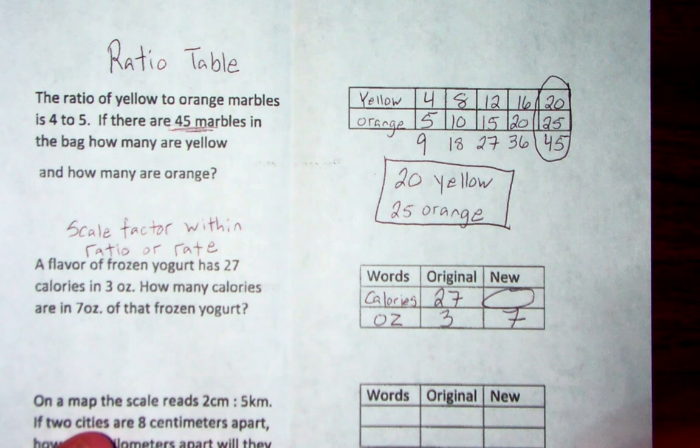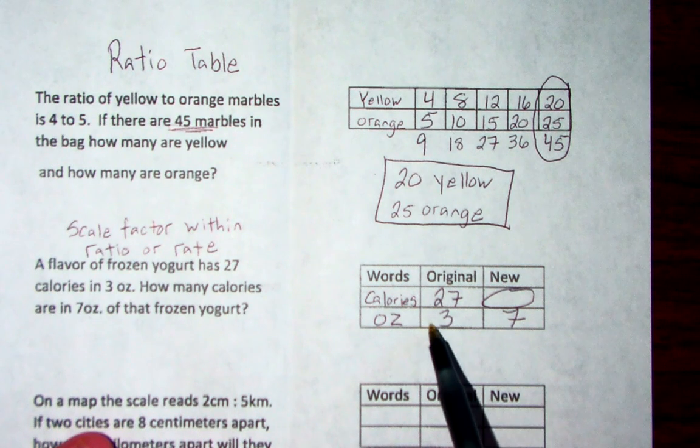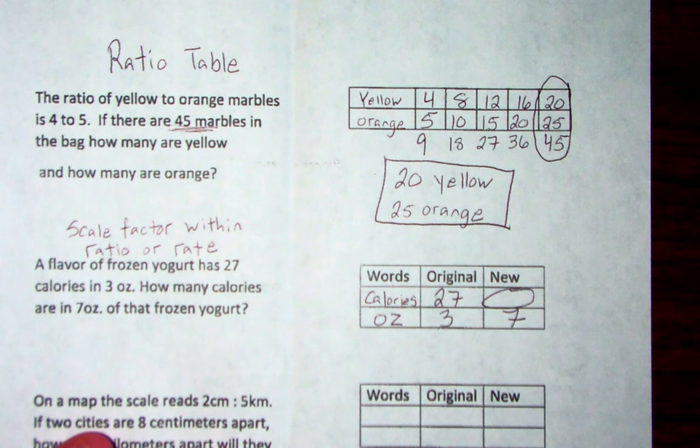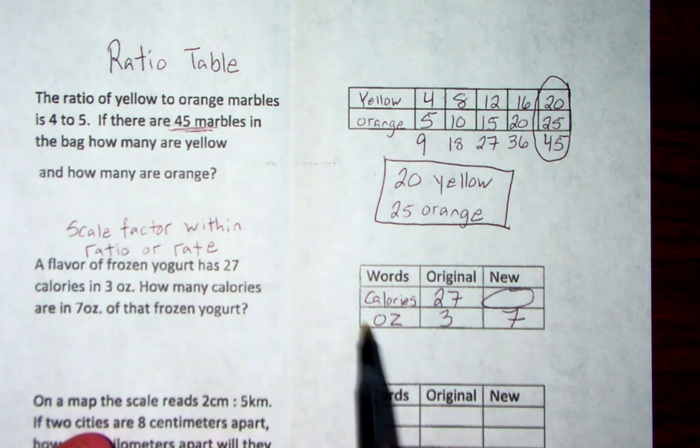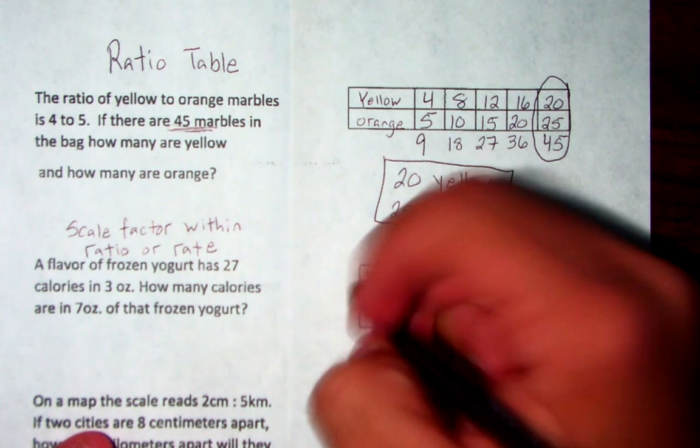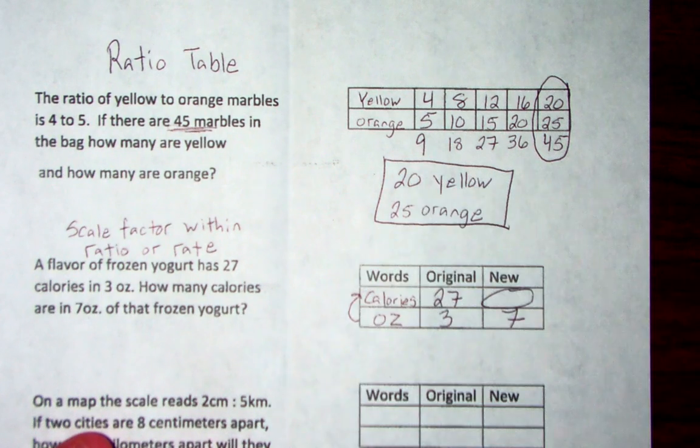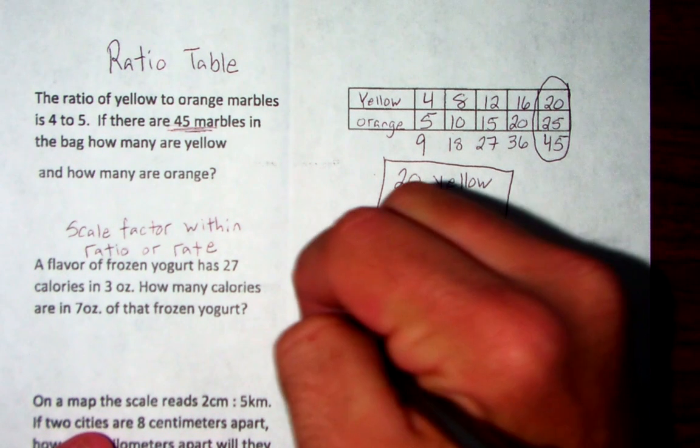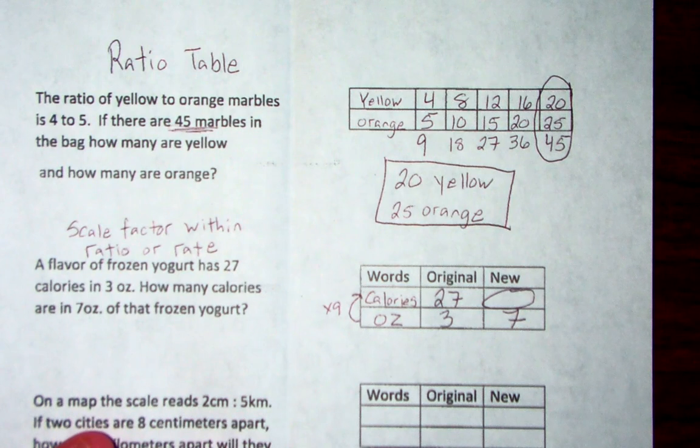Now on this one, if we go from left to right, that's not a good scale factor to go from 3 to 7. That's going to give us a pretty terrible decimal. But I'm actually going to go from down to up. It's a nice little scale factor to go from 3 to 27. What did I multiply by? Good, I multiplied by 9. So your scale factor is multiplying by 9.